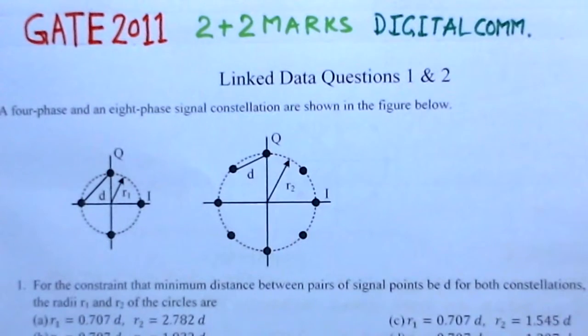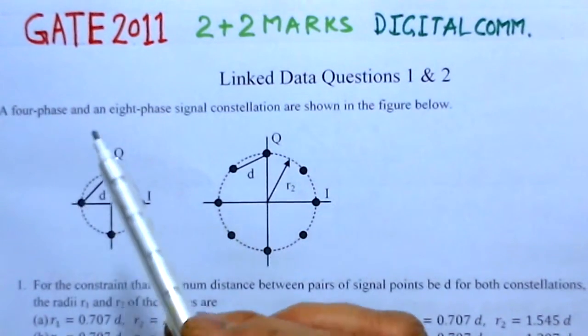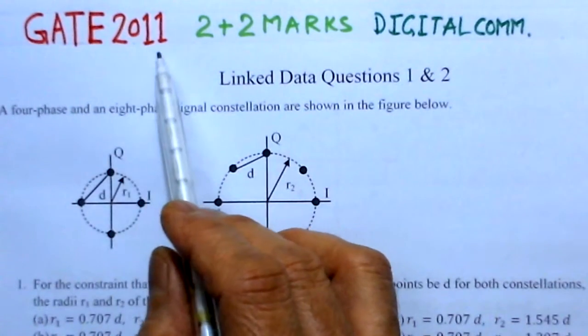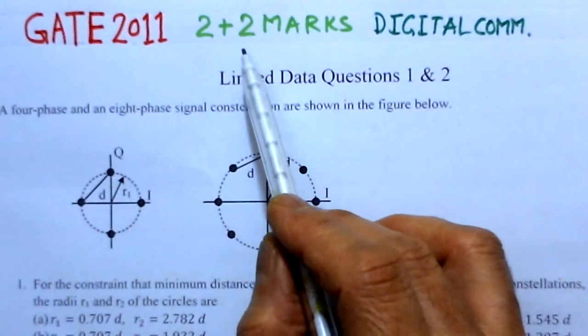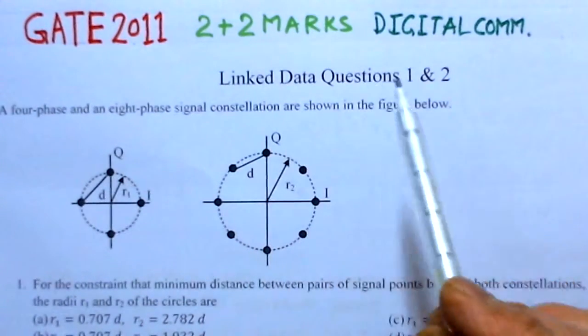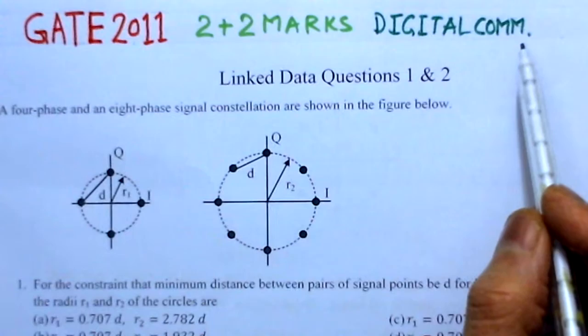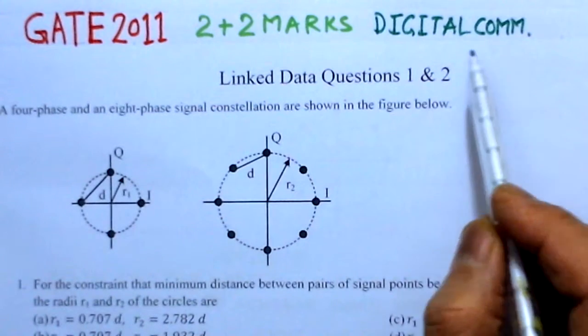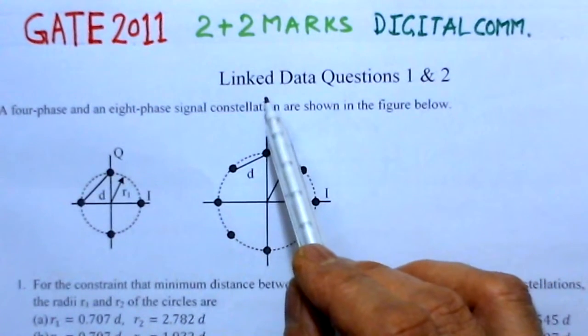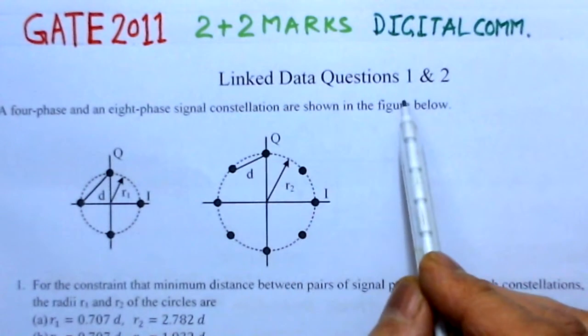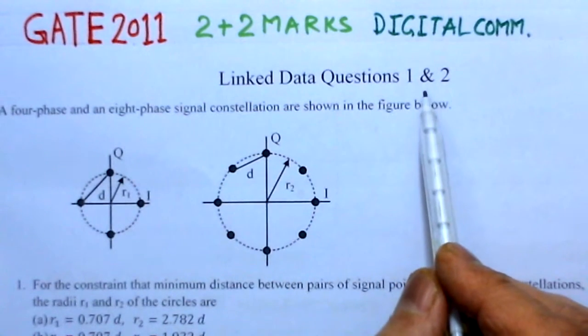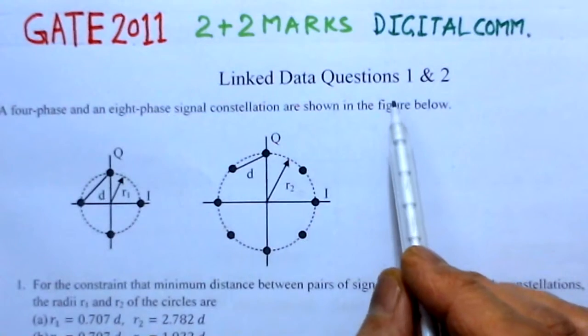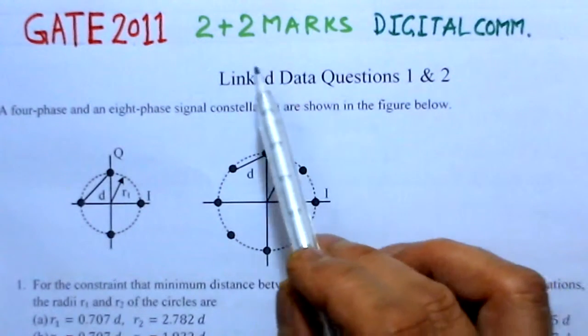The present problem is from GATE 2011 and it is worth 2 plus 2 marks in the area of digital communication. This problem is of linked data type, having 2 parts of 2 marks each.